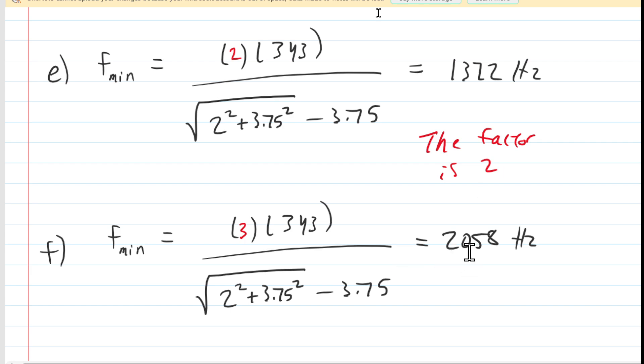And then for part f, we take our answer, 2,058, divide that by 686, and you would get a factor of 3. So the correct answer to part f is that the factor is 3.